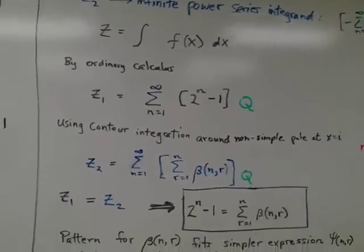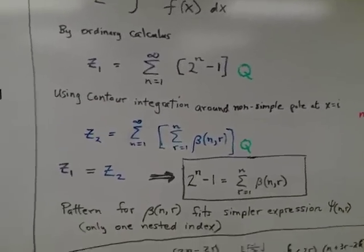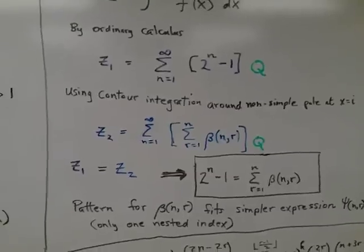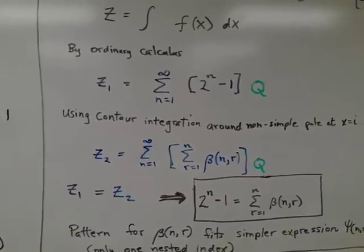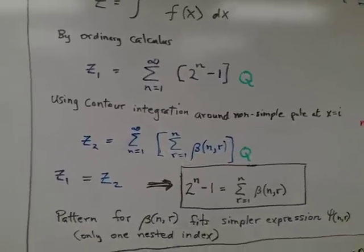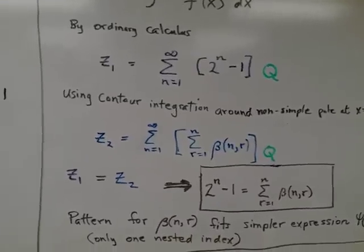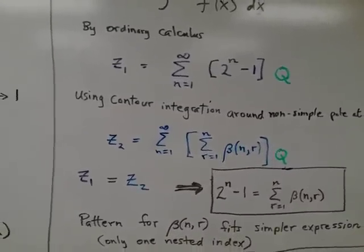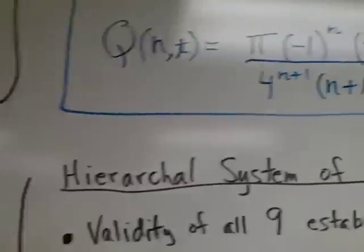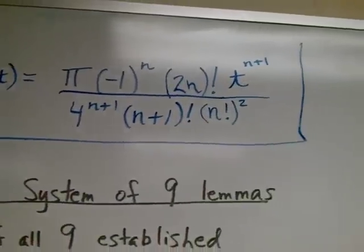If you calculate the integral both ways, the first way, just using ordinary calculus, gives you an infinite power series from one to infinity of the Mersenne factor times a factor Q, which is just an ordinary combinatorial type of term involving n and r.